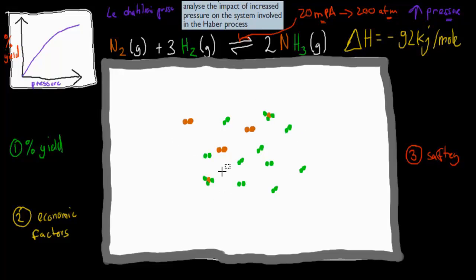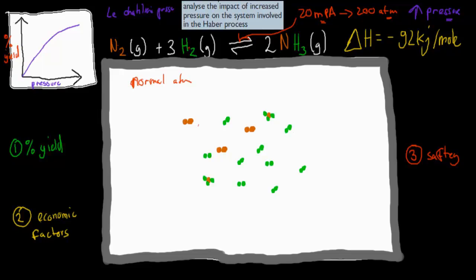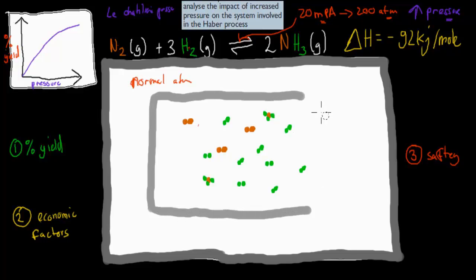At normal atmospheric pressure, we have 3 moles of nitrogen gas and 9 moles of hydrogen gas, and let's say 2 moles of ammonia — so a 1:3 ratio of nitrogen to hydrogen. What would happen if we increase the pressure? We can do that by making the container smaller, and if we make the container smaller that means we're increasing the pressure, because the particles are going to have a higher frequency of hitting the actual container since the container itself is smaller.